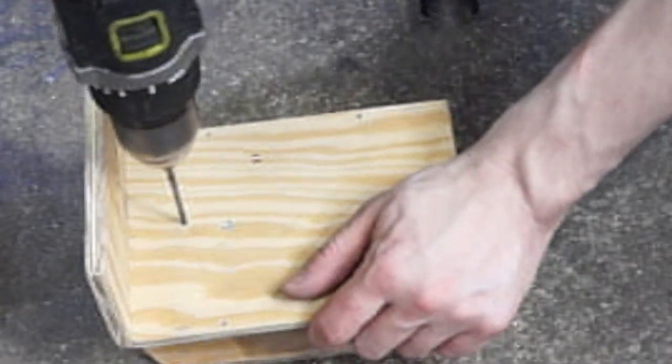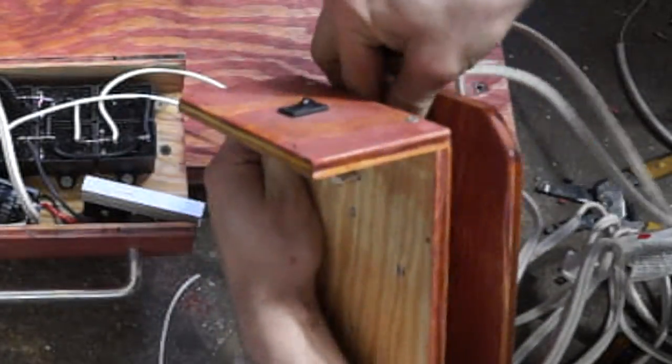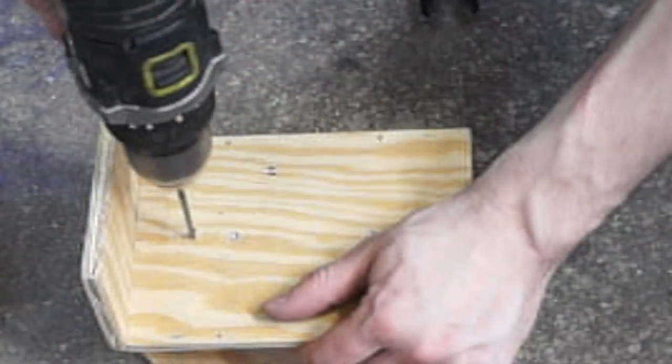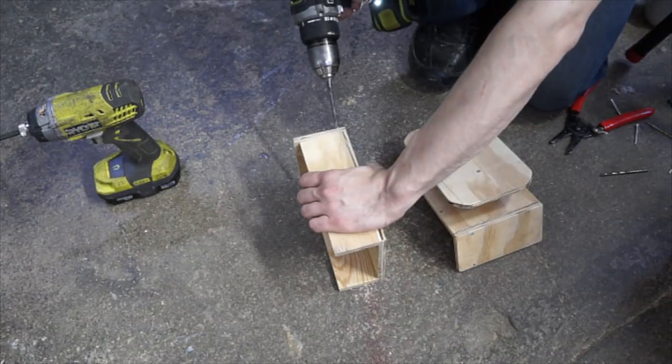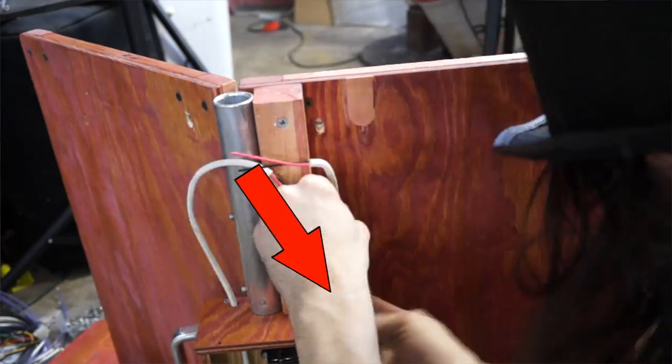Two holes needed to be drilled through the back plate to allow the power cord wires to pass through later on. And now is also a good time to drill some holes for the LED power wires.